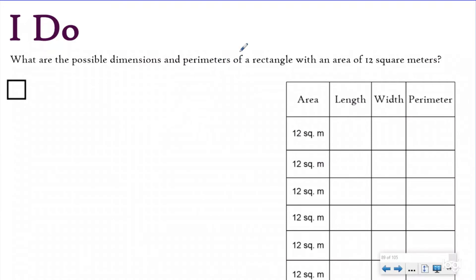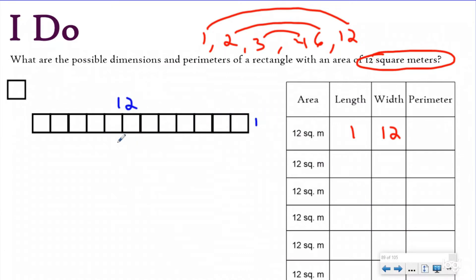Our I do problem says, what are the possible dimensions and perimeters of a rectangle with an area of 12 square meters? So just like we made the arrays, we want to make different size rectangles that have the same area. All of our rectangles are going to be made with 12 square meters, but the length and width is going to be different for each of them. The first thing I want to do is think about what are my factors of 12. So if I make a factor rainbow of 12, I start with one times 12. I also know that two, because it's even, times six is going to equal 12. And then I have three times four. If I make the length one and the width 12, what is my perimeter? Well, I need to count all the edges. And that's going to give me a perimeter of 26 meters.